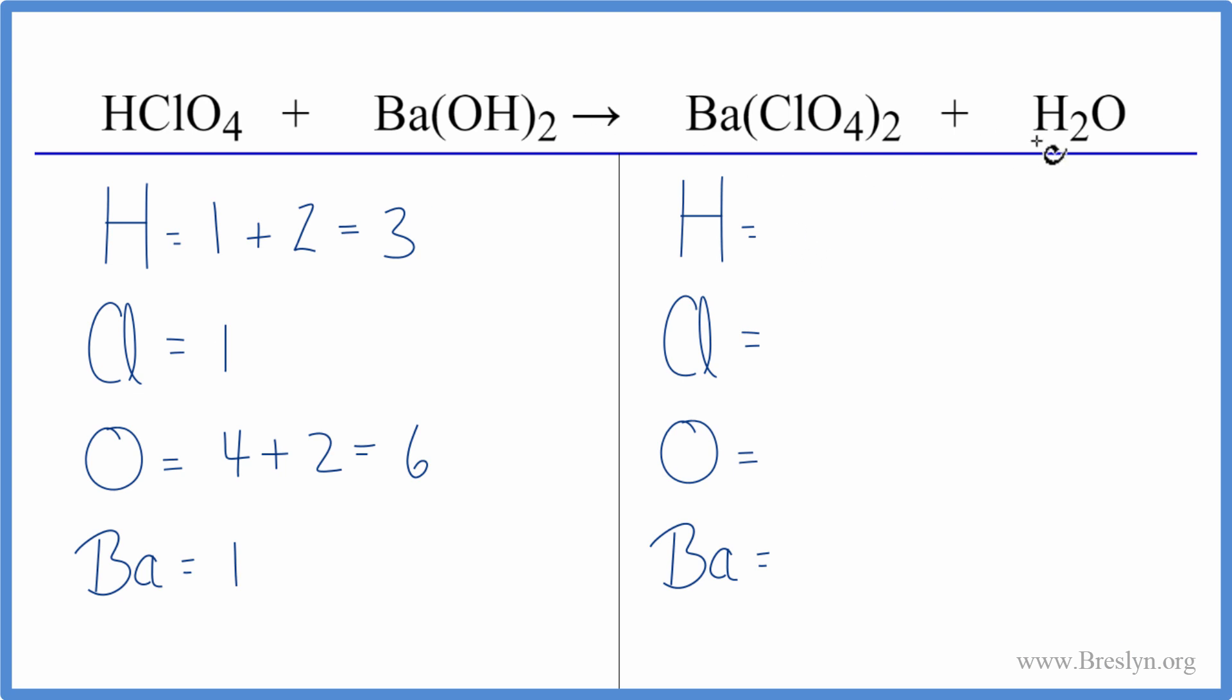On the product side we have two hydrogens, two times the one chlorine, two of those oxygens, two times four that gives us eight plus we have one oxygen with the H2O. So now we have nine oxygens and then just one barium.